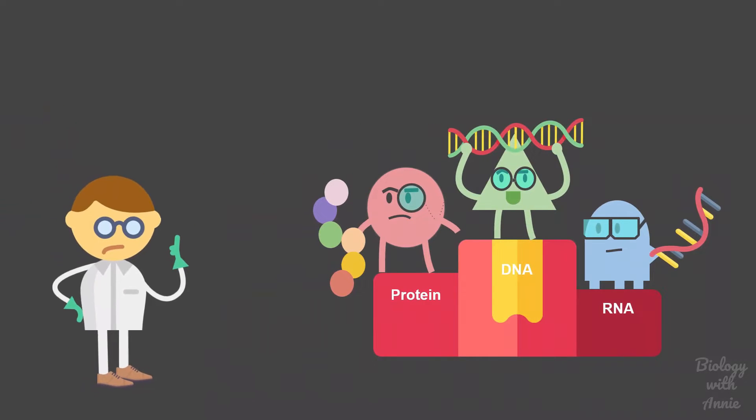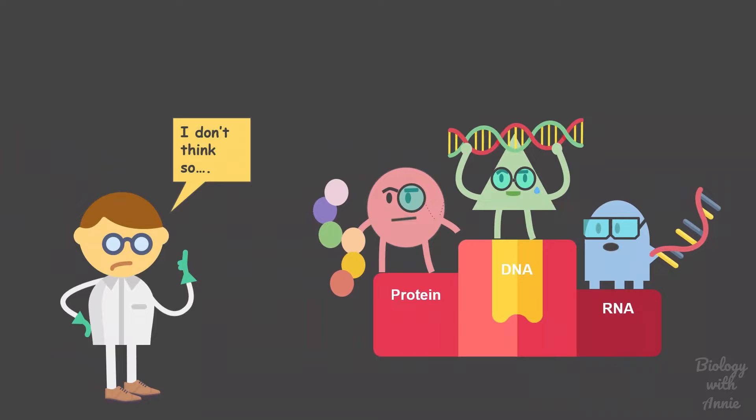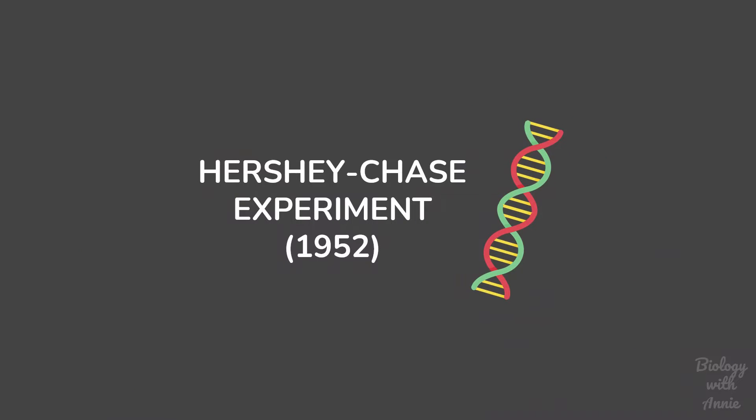The second piece of evidence implicating DNA as genetic material came from a study conducted by Alfred Hershey and Martha Chase in 1952. They were studying an organism called T2 bacteriophage.